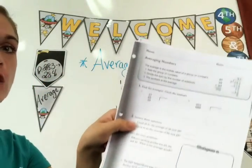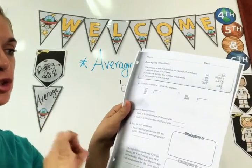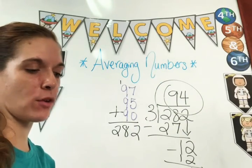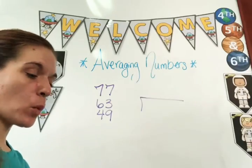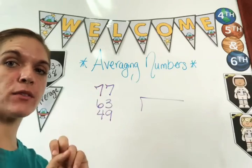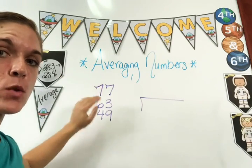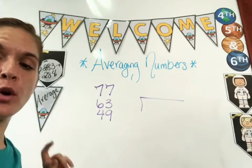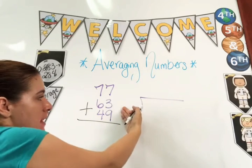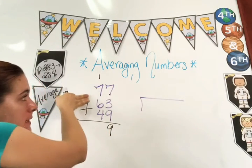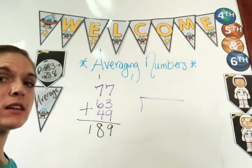With that, you know how to do the whole front page. I'm going to do number one, letter A with you, and the rest is up to you. Even the word problems are about average. For number one letter A: remember, the two steps are add and divide. Can you have a number above 77? No. Can you have an answer below 49? No. First you add: 7 plus 3 is 10, 10 plus 9 is 19; 1 plus 7 is 8, 8 plus 6 is 14, 14 plus 4 is 18. Your sum is 189.